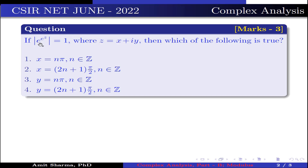The question is: if mod of e to the power e to the power z is equal to 1, where z is equal to x plus i·y, then which of the following is true? Option 1: x is equal to n·pi, where n belongs to Z. Option 2: x is equal to (2n+1)·pi/2, where n belongs to Z. Option 3: y is equal to n·pi, where n belongs to Z. Option 4: y is equal to (2n+1)·pi/2, where n belongs to Z.